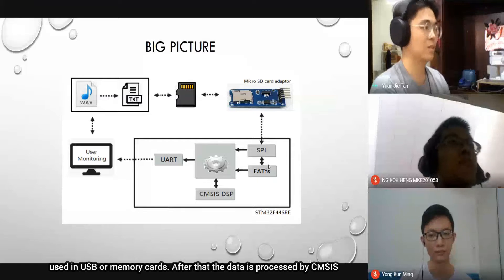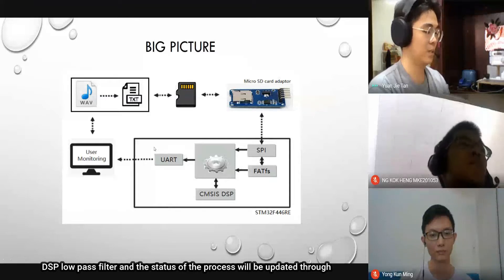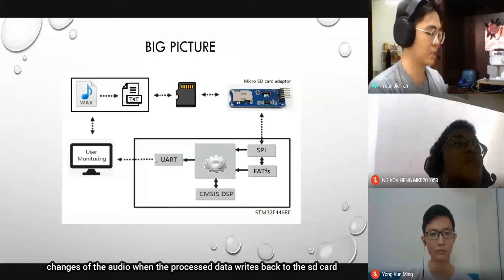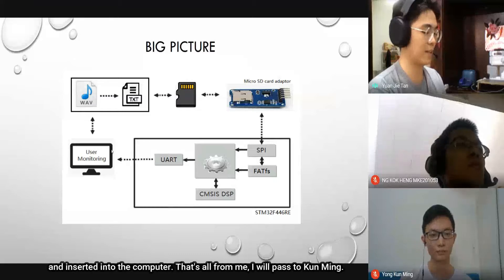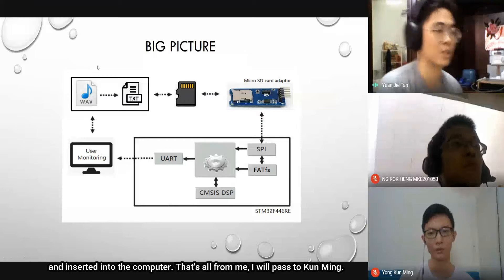After that, the data is processed by the CMSIS DSP low pass filter, and the status of the process will be updated through the UART. We can make observations of the waveform and the changes of the audio when the processed data is written back to the SD card and inserted into the computer. That's all from me. I will pass it to Kun Ming.